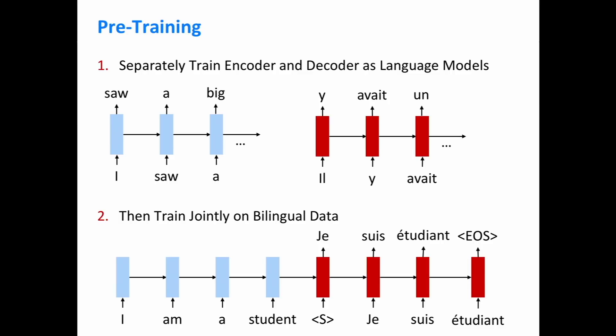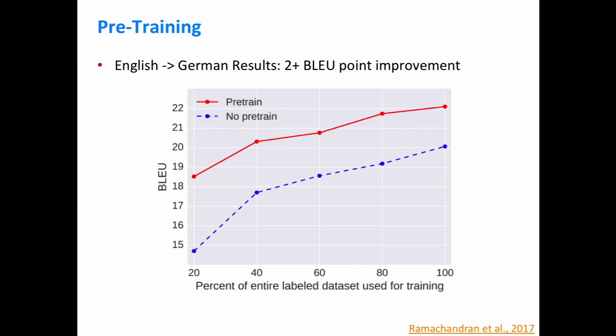Here is a plot showing results of this pre-training technique for English-to-German translation. The x-axis shows how much supervised training data you provide, while the models also have large amounts of monolingual data for the pre-training step. You can see about two BLEU points improvement — the red line above the blue line. Not too surprisingly, this gain is especially large when the amount of labeled data is small.